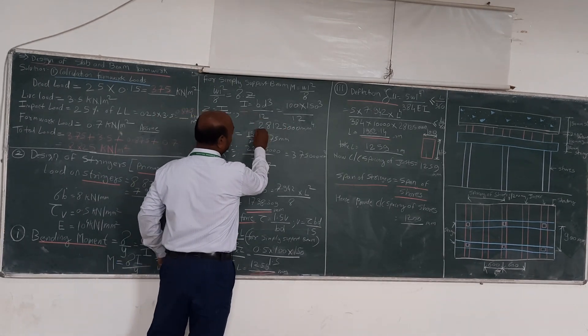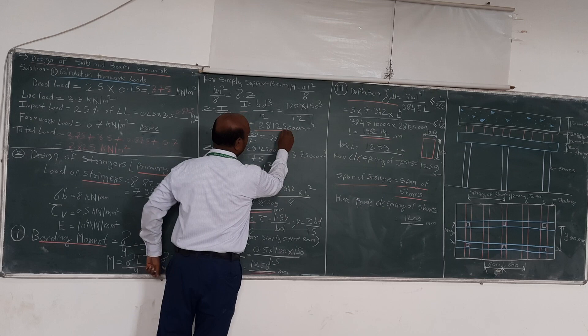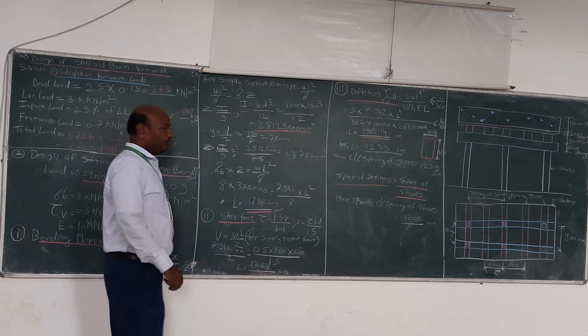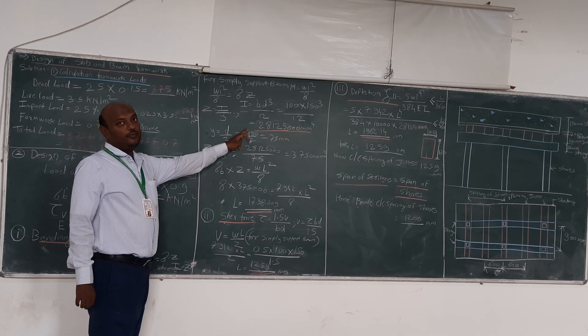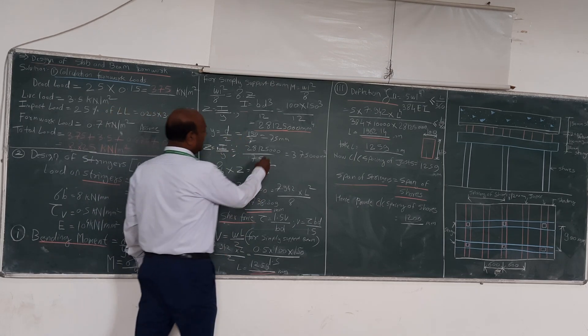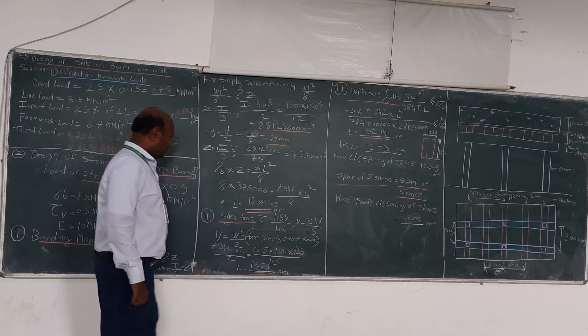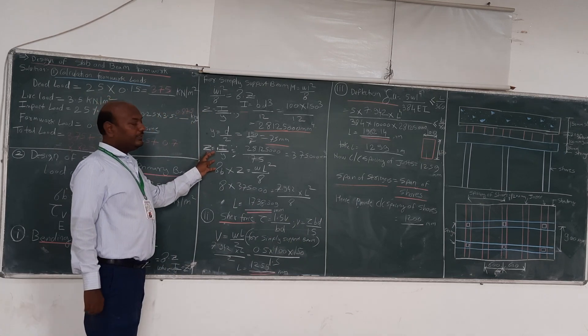That is bd cubed by 12. That is 150 times 200 cubed by 12, which equals 100 million mm to the fourth. Then we will find out y, that is d by 2. d is given in the question as 200, divided by 2, y is equal to 100 mm.